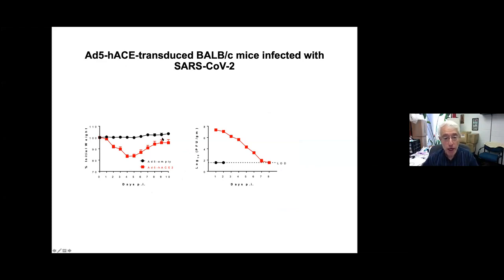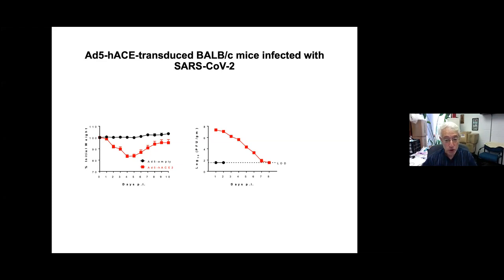We then infected BALB/C mice with the virus. If mice are transduced with adenovirus 5 not expressing ACE2, there's no change in weight. But if they express ACE2, there's up to almost 20% weight loss. This weight loss occurs at days four to six and then mice regain weight, which we also saw with MERS. Virus titers are maximal right after infection and then decrease with time, and in the absence of ACE2 receptor, no virus titers are detectable.